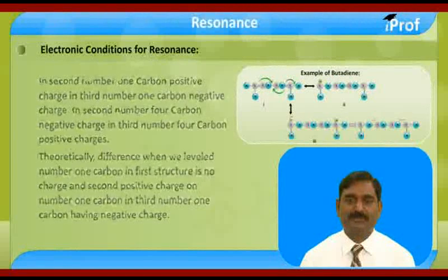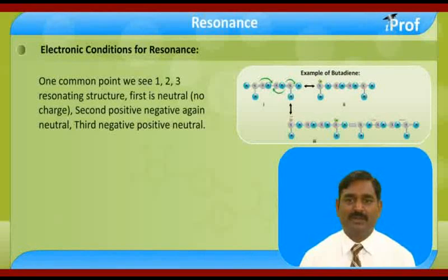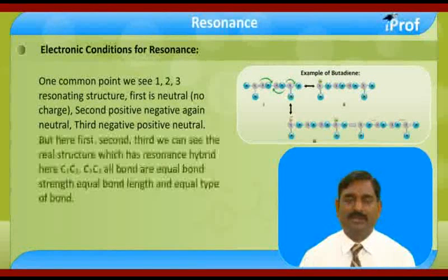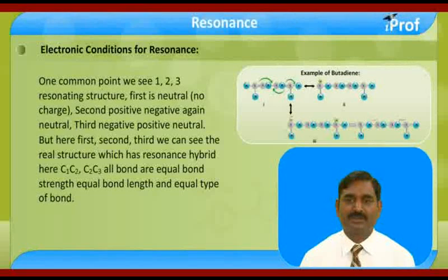One common point we see across all three structures: structure one is neutral with no charge; structure two has positive and negative charges (net neutral); structure three has negative and positive charges (net neutral). So all three resonating structures are overall neutral.